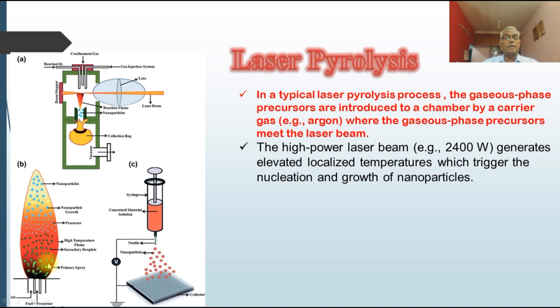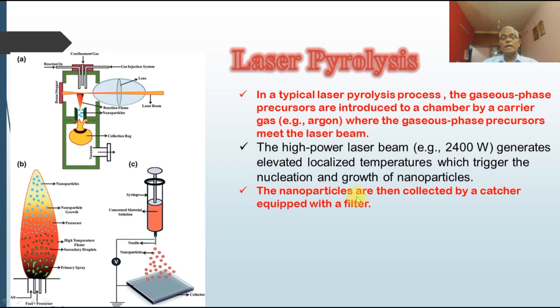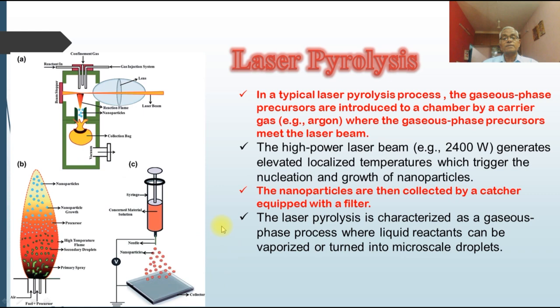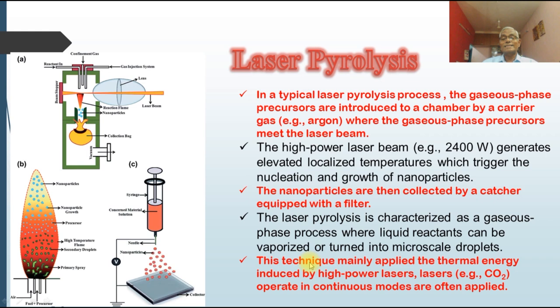The localized temperature triggers nucleation and growth of nanoparticles. When the gas is sprayed, because of the high temperature it separates out, forming secondary droplets, and as temperature comes down to a desired level, nanoparticles or nanocomposites are formed. Nanoparticles are then collected by catcher equipment with a filter. Laser pyrolysis is characterized as a gaseous phase process where liquid reactants can be vaporized into micro-scale droplets, using thermal energy from a high-power laser such as a CO2 laser operating in continuous mode.